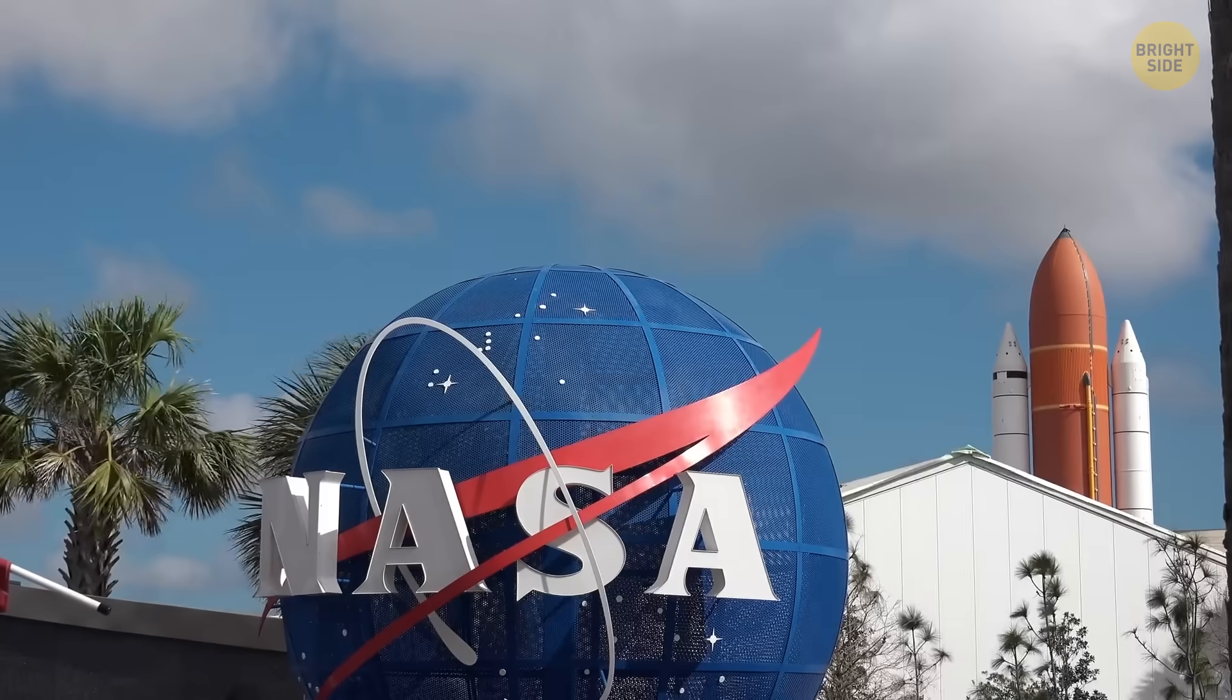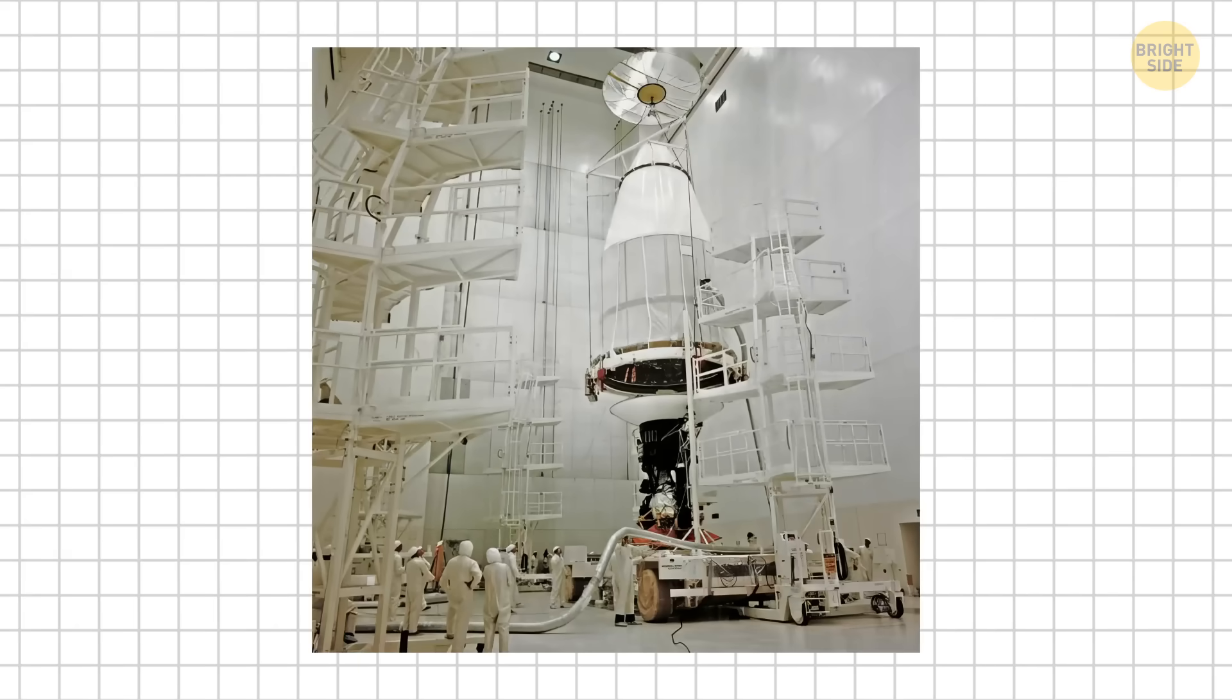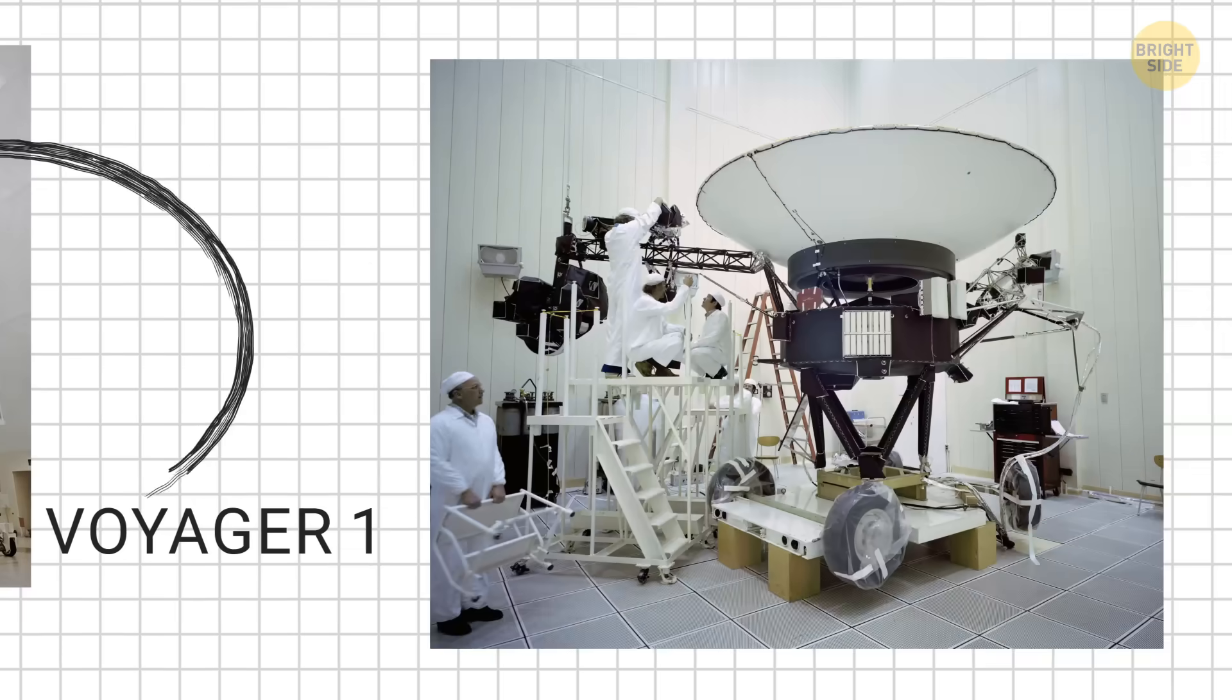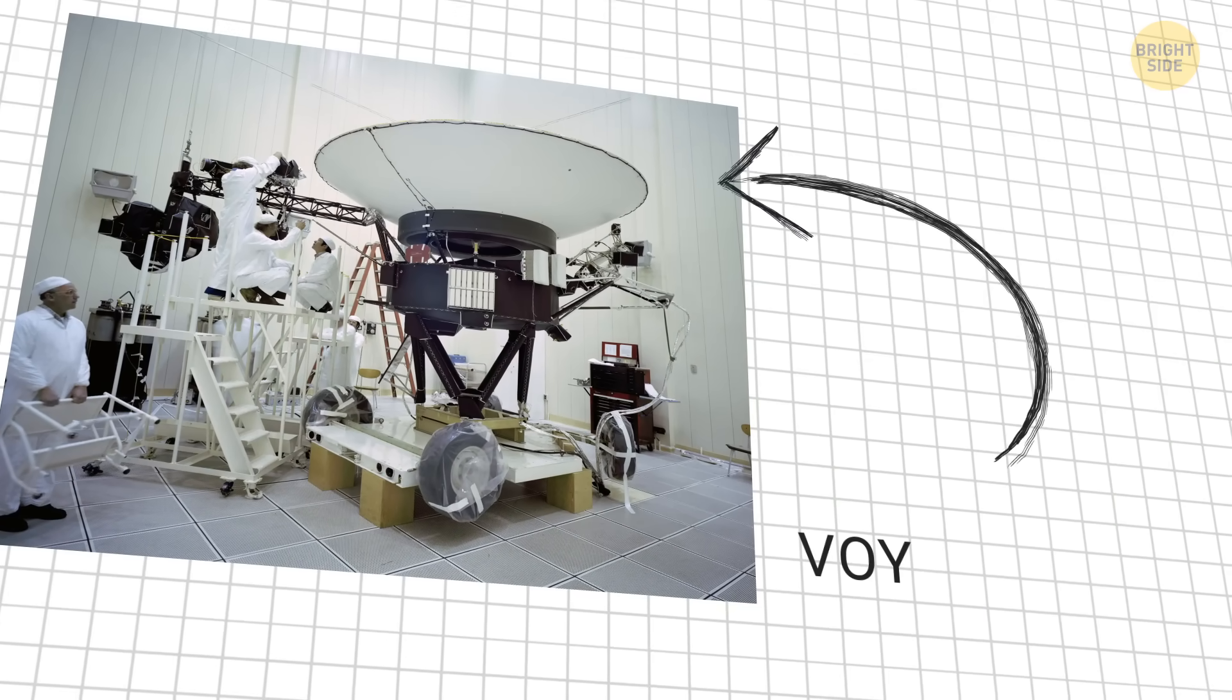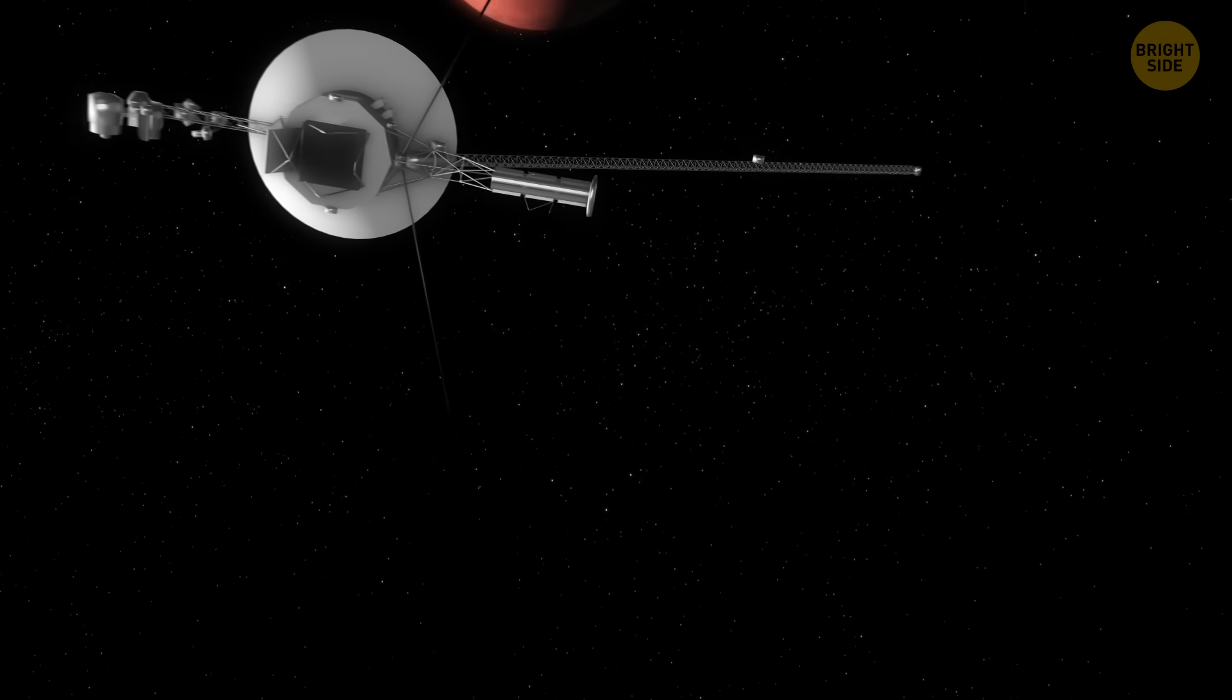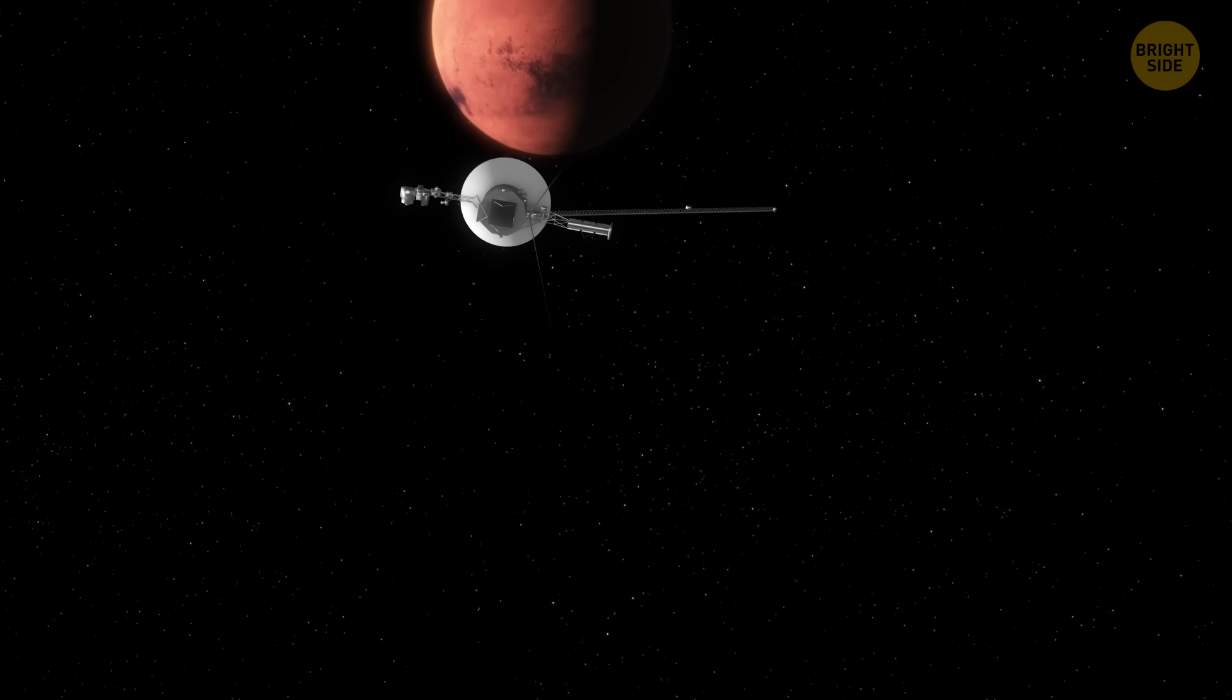Now, let's dig a little deeper into the Voyager program itself. It's made up of two spacecraft, Voyager 1 and Voyager 2. Even though Voyager 2 was launched first in August 1977, Voyager 1 took off just two weeks later on a faster, more direct path. These two spacecraft have been traveling for more than 40 years, exploring worlds no human will ever walk on, at least in the near future.